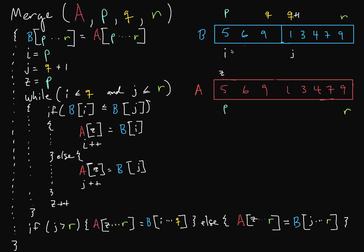Then we mark a few things on B: the first index of the left sorted side and the first index of the right sorted side. We also mark the first index of A where we start to copy values back into A in sorted order. Then we have a while loop where all of our sorting actually happens. The first condition checks if there are still elements in the left side, and the second condition checks if there are still elements in the right side.